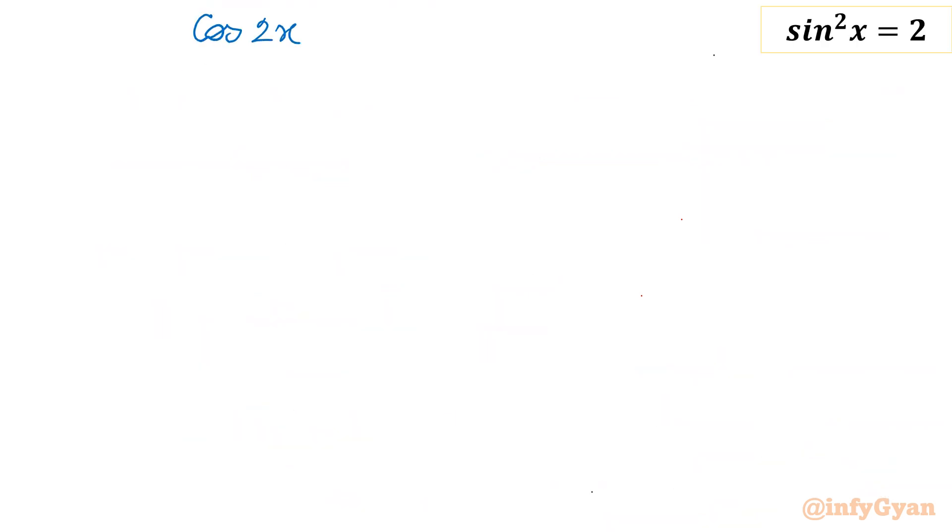Now Euler's identity will come into the picture. Why? You can see it is 3 i square, a complex number. So I need to consider Euler's identity, which is very powerful in case of complex numbers. What is that? E raised to the power iθ is equal to cosine θ plus i sine θ. For the general value, θ will be replaced by θ plus 2kπ where k is an integer.